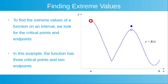This left endpoint, currently highlighted, is an absolute maximum value. On the open interval, now highlighted with a red line, this left endpoint is also a local maximum value. This right endpoint, currently highlighted, is a local maximum value on the open interval, now highlighted with a red line.